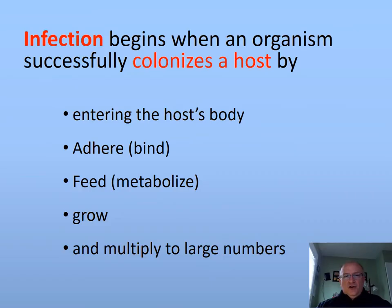Now that the microorganism has entered the body through its portal of entry and reached the part of the body that normally should be sterile, we call this an infection. The organism will adhere to the surface of the cells, start feeding and metabolizing, excrete metabolic waste, and grow and multiply into larger numbers. Remember the definition of disease — disease is when an organ or structure doesn't function correctly. Disease will come later, when the numbers of organisms grow large enough that they obstruct the function of that organ or structure.